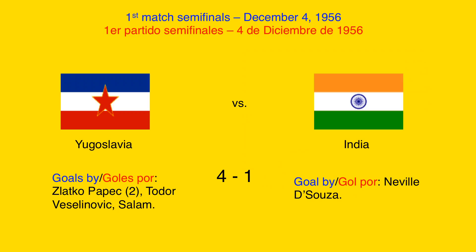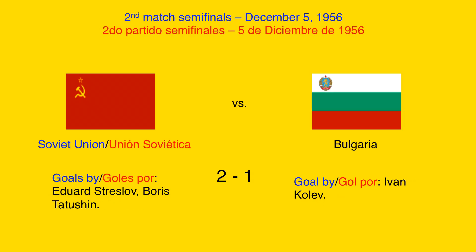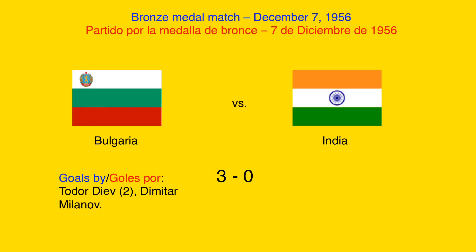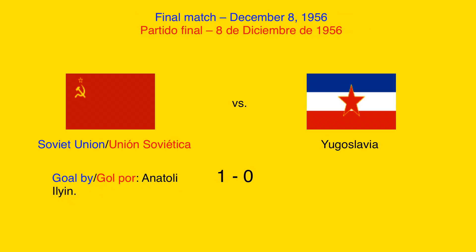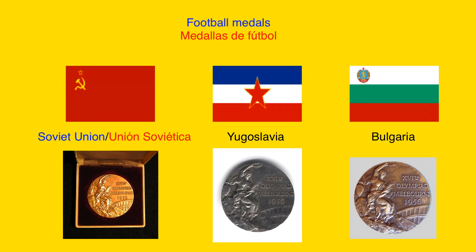In the first match of the semifinals, Yugoslavia beat India 4-1. In the second match of the semifinals, the Soviet Union beat Bulgaria 2-1. In the bronze medal match, Bulgaria beat India 3-0. In the final match, the Soviet Union beat Yugoslavia 1-0. The football medals given at the 1956 Summer Olympic Games were the golden medal for the Soviet Union, the silver medal for Yugoslavia, and the bronze medal for Bulgaria.